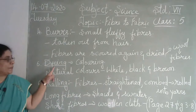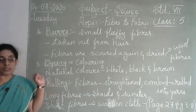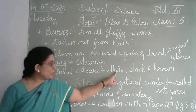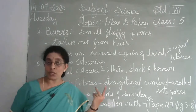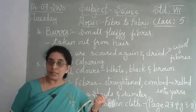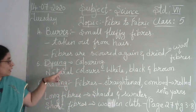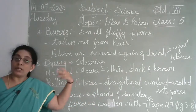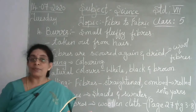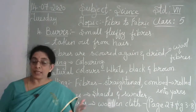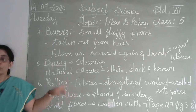The next step is dyeing — giving colors to the wool. The natural colors available from animals are only white, black, and brown. But when you buy sweaters and shawls in shops, they come in different colors. These artificial colors are added through dyeing, which gives permanent coloring to the wool.